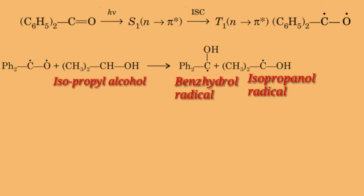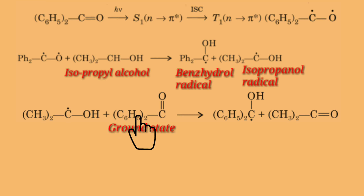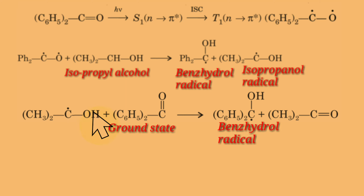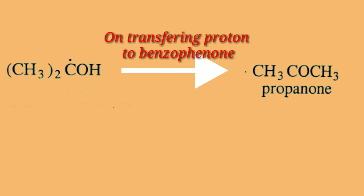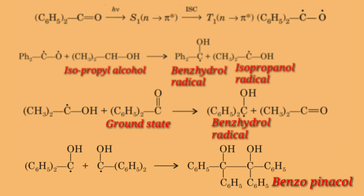In the next step, the isopropanol radical reacts with benzophenone in its ground state. Benzophenone abstracts hydrogen from the isopropanol radical, i.e. the isopropanol radical transfers its hydrogen to the oxygen atom of the carbonyl group of benzophenone. Since the isopropanol radical has a very short lifetime, it transfers its hydroxylic hydrogen too rapidly and gets converted to propanone rather than undergoing dimerization to pinacol. The benzhydrol radical then undergoes dimerization to give the desired product, i.e. benzopinacol.